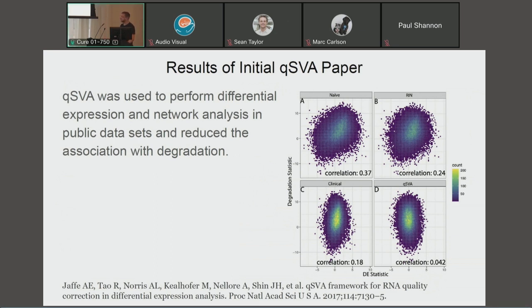So this is a problem, because that shouldn't happen. Controlling for RIN, RNA integrity number, which is a standard in the field, fails to remove this effect.